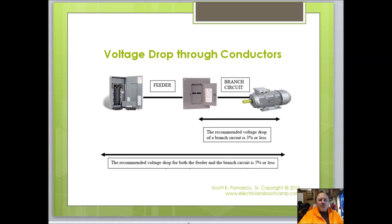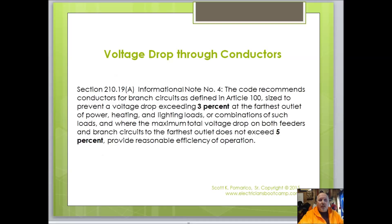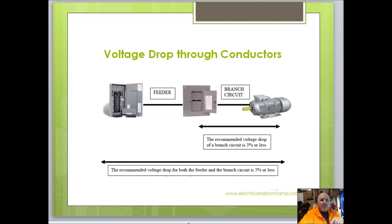When we talk about voltage drop, we talk about voltage drop through conductors. From the beginning where the service comes in to the last receptacle or motor, that would be five percent. For our calculations, we use three percent — from our panel or sub-panel to a particular device or motor. In the code, section 210.19(A) informational note tells us to use three percent, and five percent for both feeders and branch circuits. On the test, you'll be using three percent.